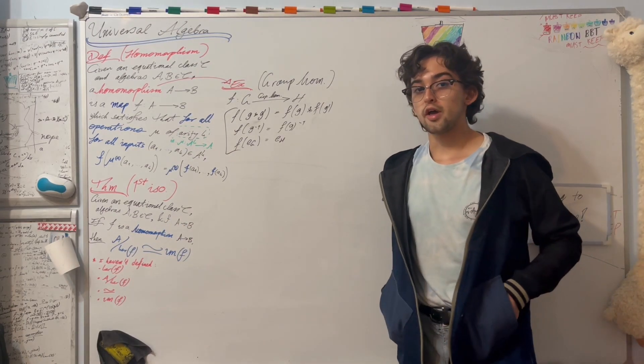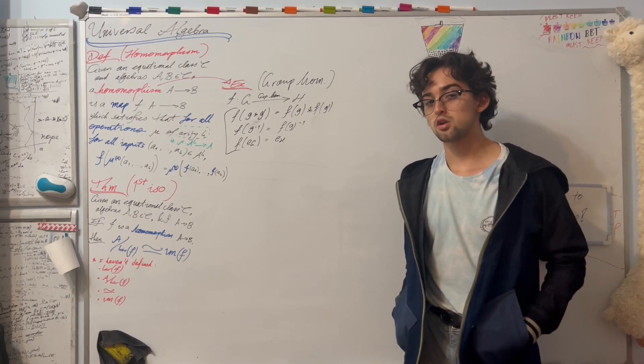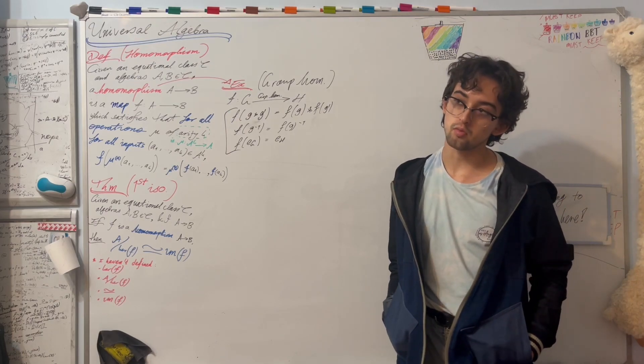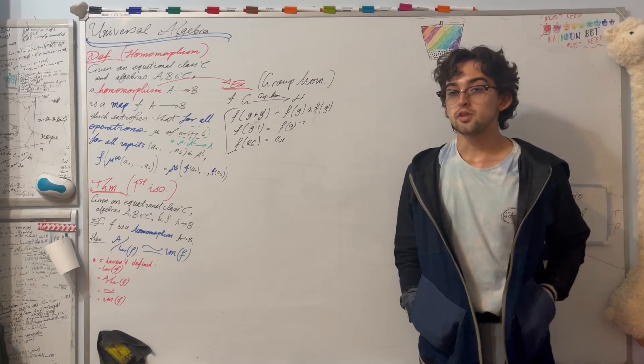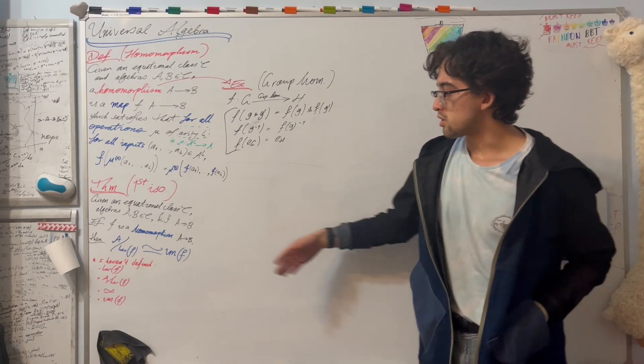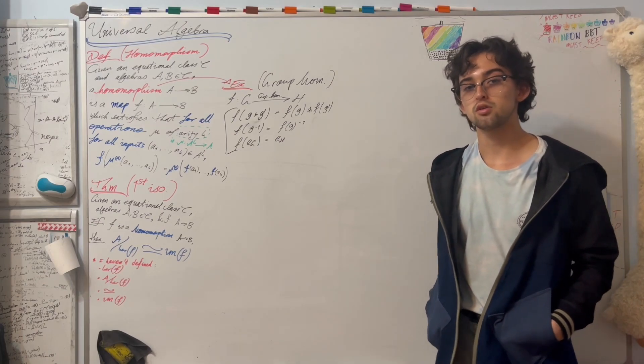In a universal algebra, we also attain various other theorems that occur very commonly, such as the second isomorphism theorem, the third isomorphism theorem, and the correspondence theorem. So I hope this motivates, even if it doesn't spell out the details on why, why we should care about universal algebra. Thank you for listening.